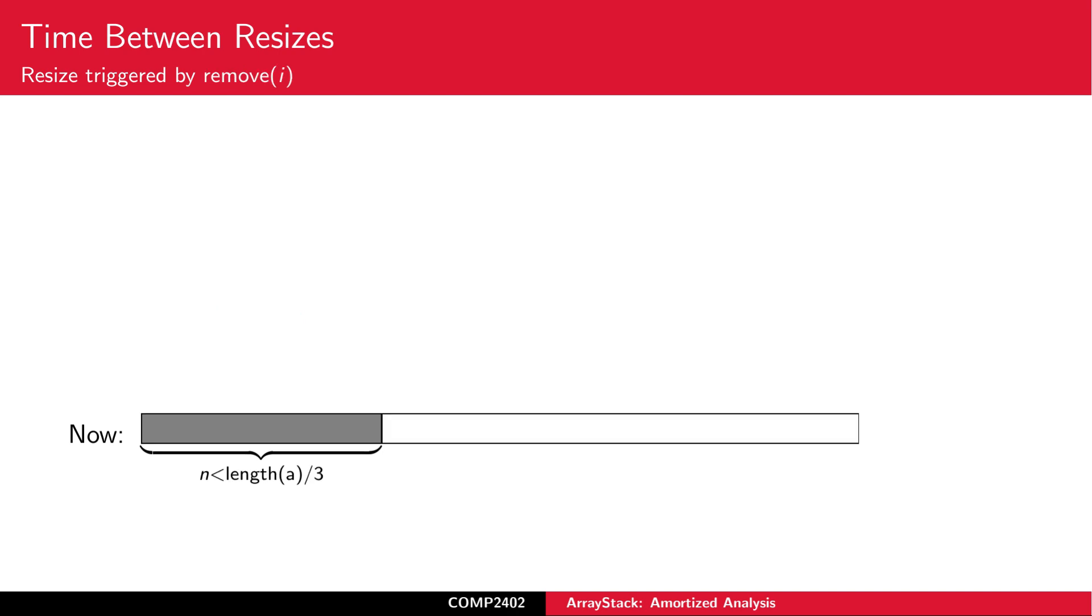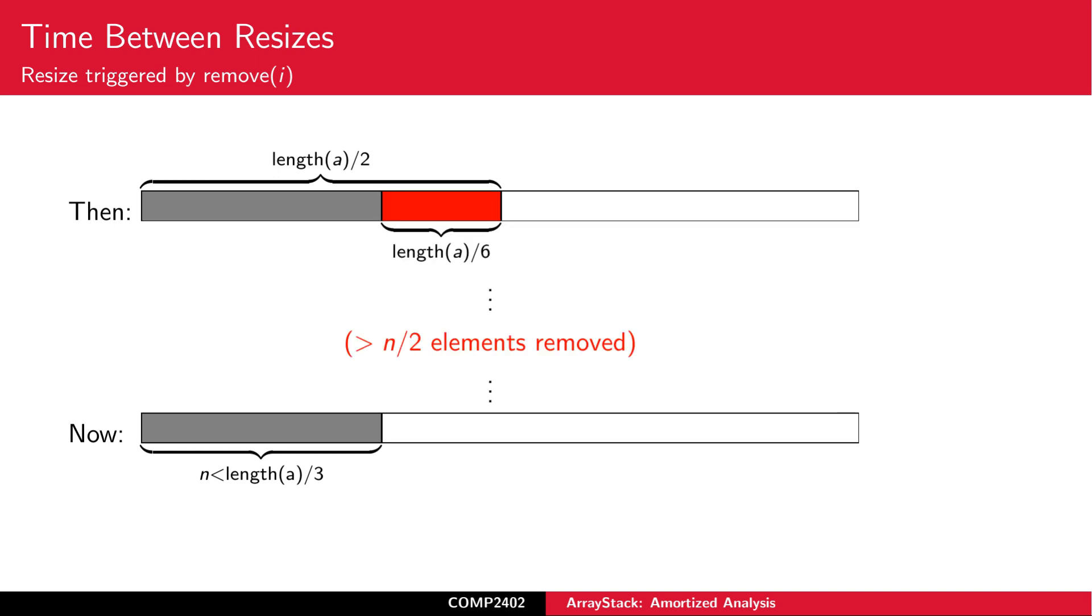Next, consider the situation just before a resize triggered by the removal of an element. This happens when A is less than one third full. N is less than one third the length of A. Again, if we look back to the situation immediately after the most recent resize operation, we see that at that time, the array A was exactly half full. Since the difference between one half and one third is one sixth, we conclude that at least N over 2 elements must have been removed from A in the meantime.